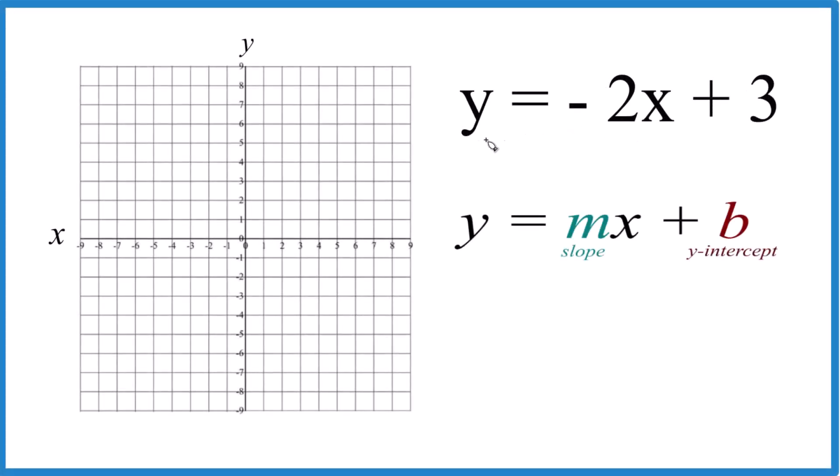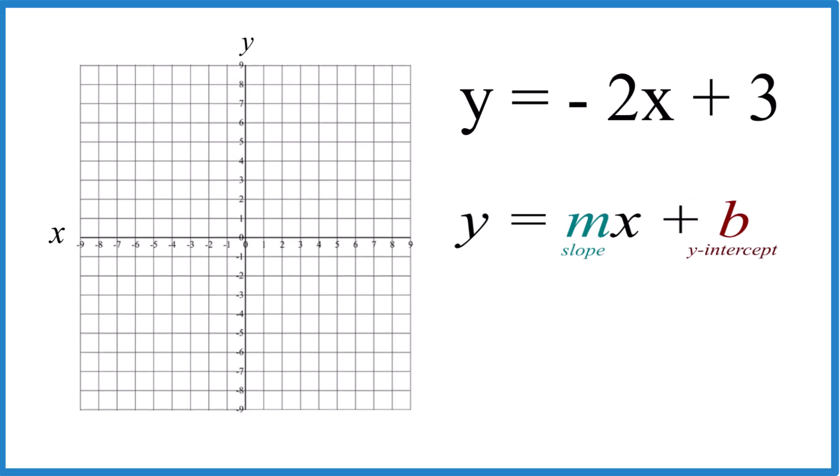In this video, we'll graph the linear equation y equals negative 2x plus 3. We're going to use slope-intercept form to do that. So starting out, b, the y-intercept, that's 3. So we go over here to the y-axis, and we go up to 1, 2, 3. That's the y-intercept. That's where our line crosses the y-axis.